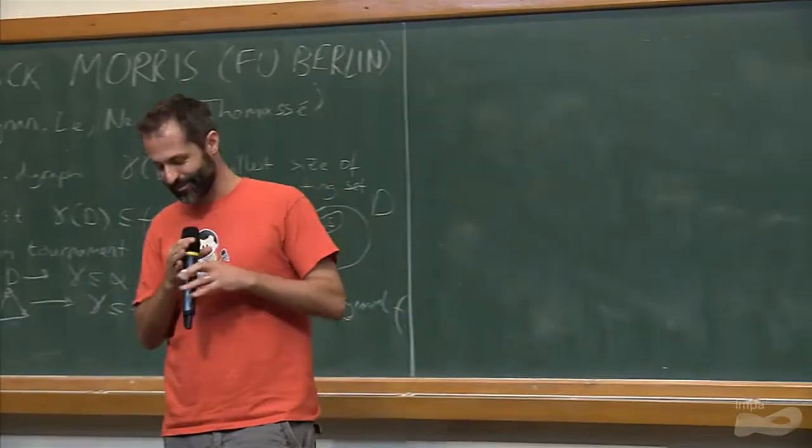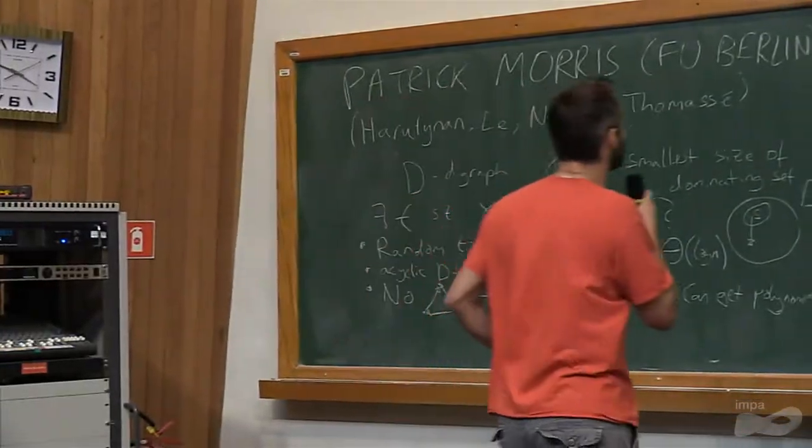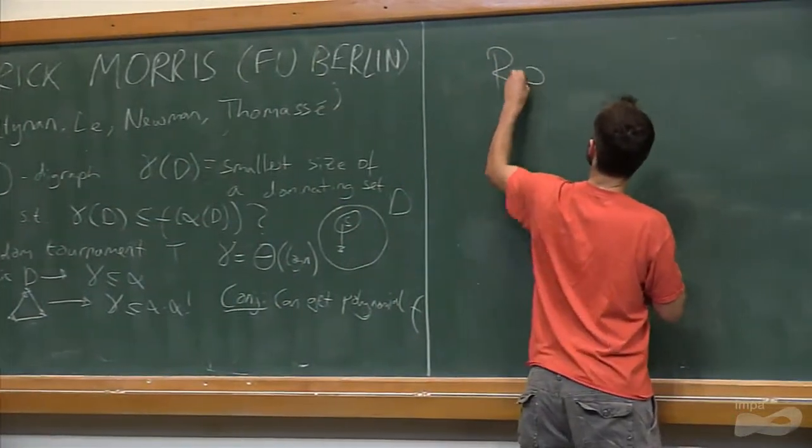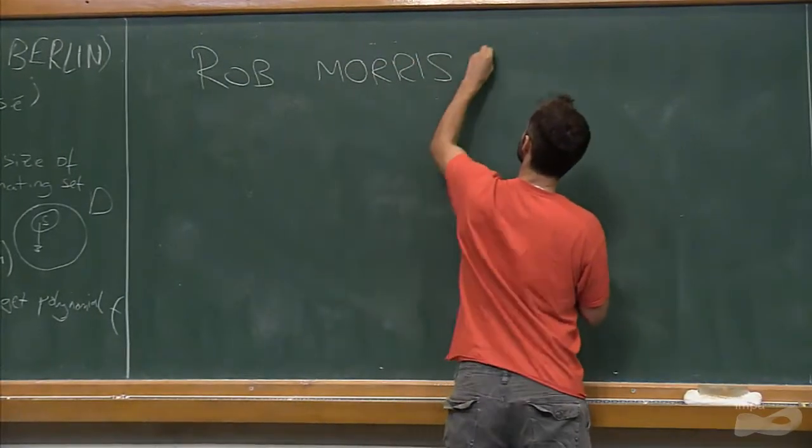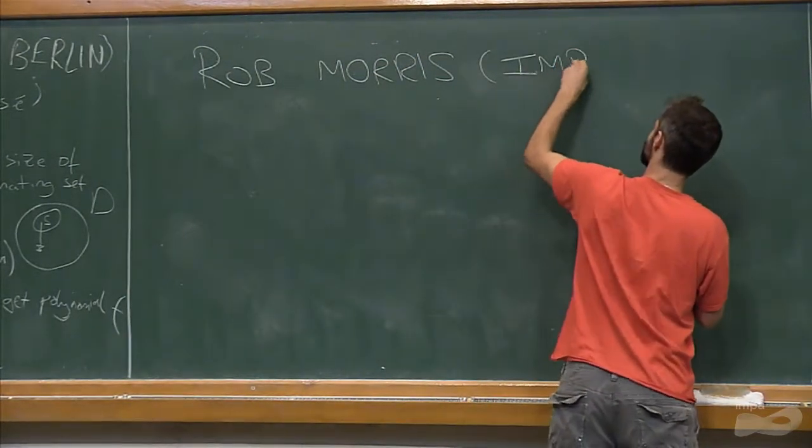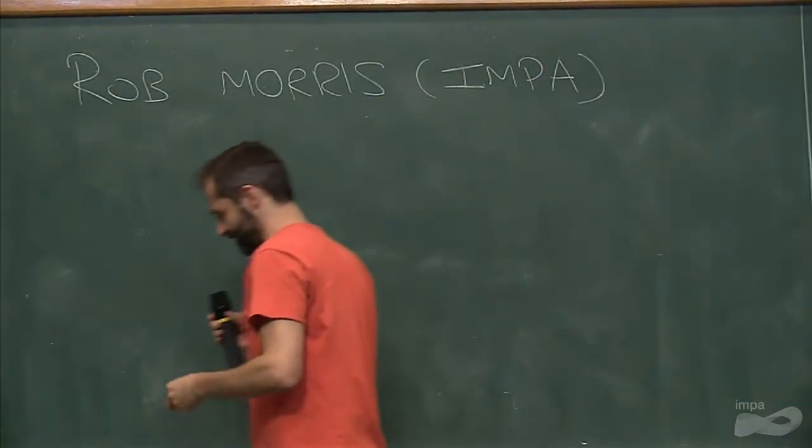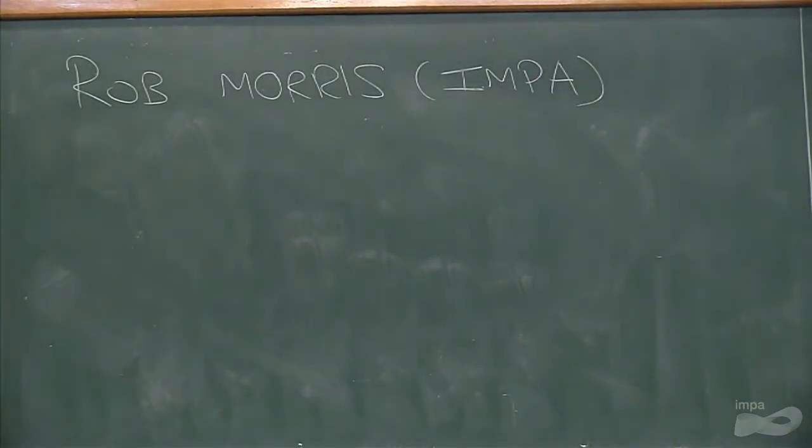So it's about a non-monotone version of the triangle-free process. The triangle-free process, you start with an empty graph, you add edges one by one, uniformly not creating a triangle, and you end up with this maximal triangle-free graph with about n to the three over two edges.